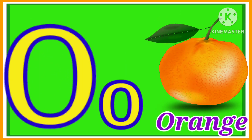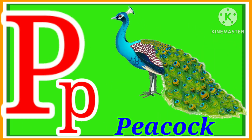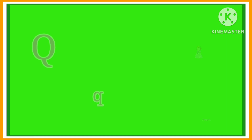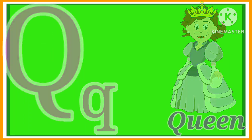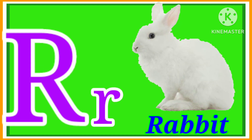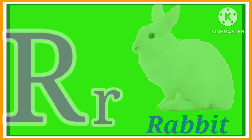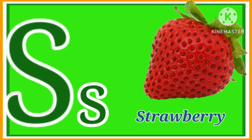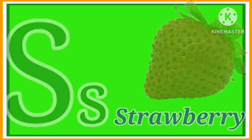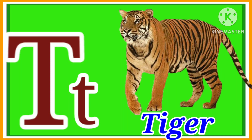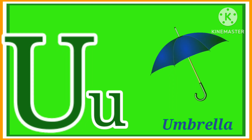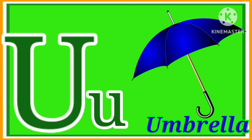O for Orange. P for Peacock. Q for Queen. R for Rabbit. S for Strawberry. T for Tiger. U for Umbrella.